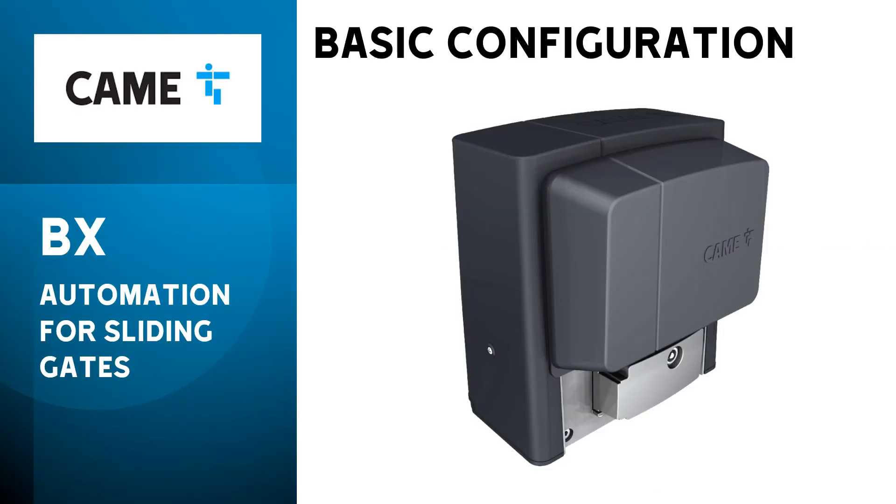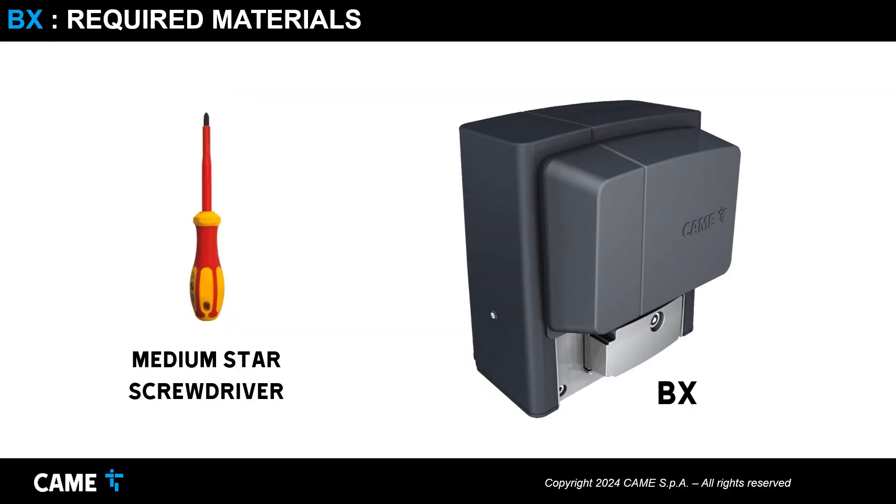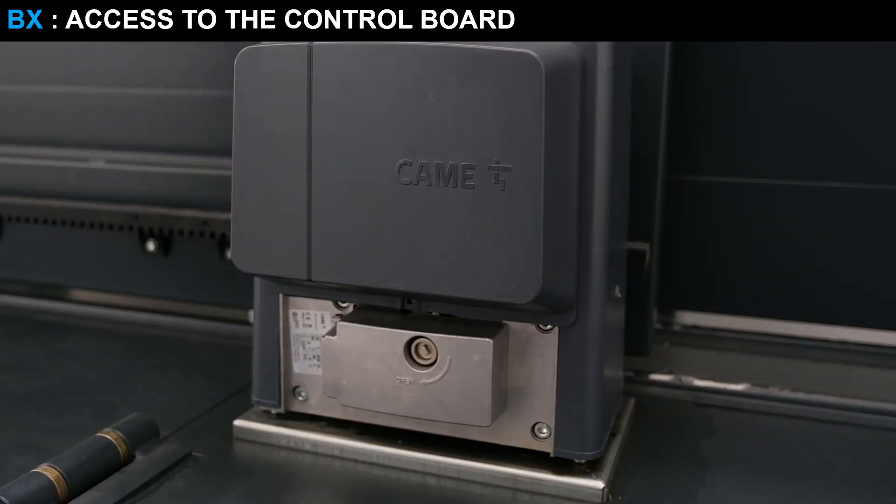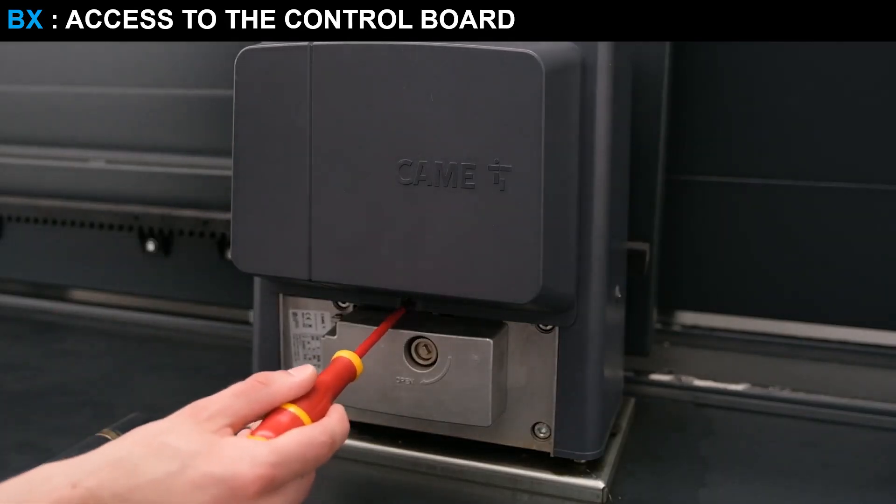Welcome to the basic configuration of CAME's BX Automation for sliding gates. To access the programming, all you need is a medium-sized Phillips screwdriver. Unscrew the screw to remove the cover and access the control panel.